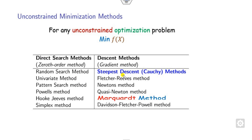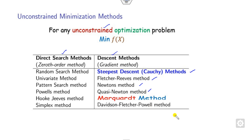We have seen that there are so many methods for solving the unconstrained optimization problems, which are categorized into either the direct search or the descent methods. These include steepest descent, Fletcher-Reeves, Newton's, Quasi-Newton's, and many more.